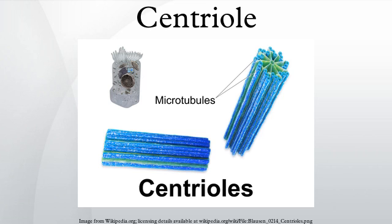In cell biology, a centriole is a cylindrical cell structure composed mainly of a protein called tubulin, found in most eukaryotic cells. An associated pair of centrioles, surrounded by an amorphous mass of dense material called the pericentriolar material, or PCM, makes up a compound structure called a centrosome.